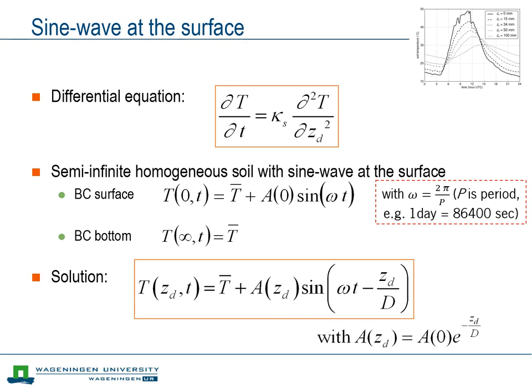The solution of the diffusion equation under the given boundary conditions is the sinusoidal variation again. But a few things have changed relative to the variation at the surface. The amplitude now depends on depth. At larger depth, the amplitude is smaller—it decreases exponentially with depth. We also see that the sine now contains a phase shift. The temperature variation at the surface and at a given depth are not in sync.